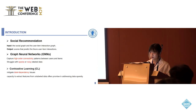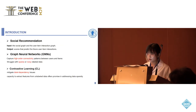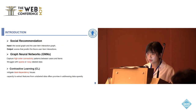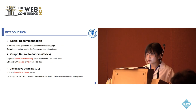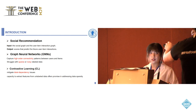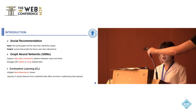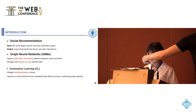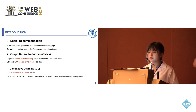Social Recommendation aims to use social relationships to predict user-item interactions. Graph neural networks can capture high-order connective patterns between users and items. However, their effectiveness heavily relies on the quality of the label data, struggling with sparse or noisy label data.